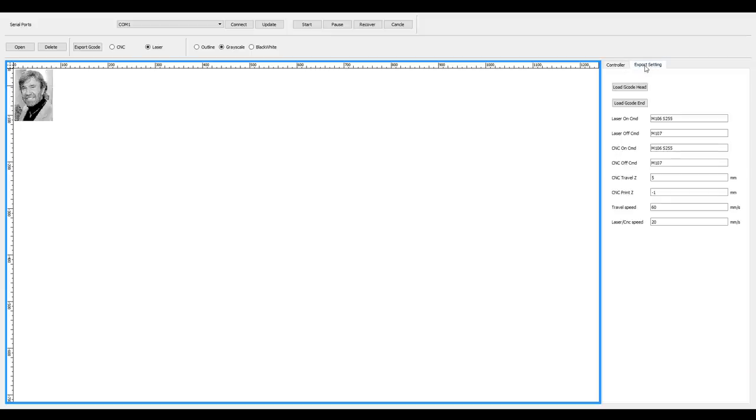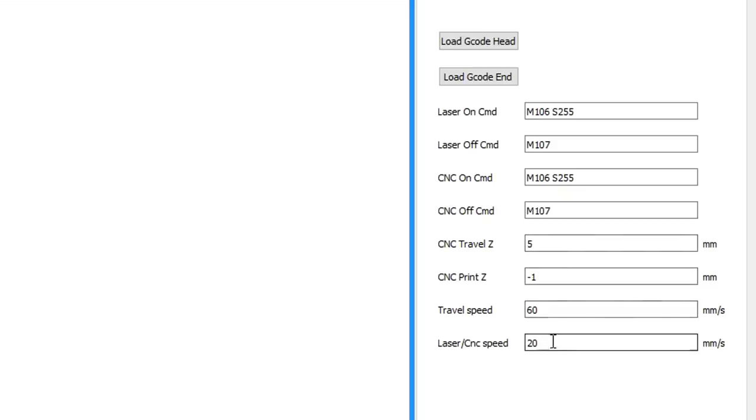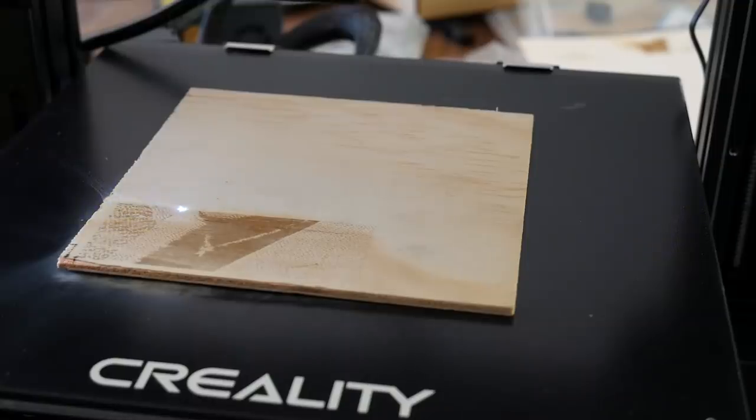My first attempt at greyscale was far too faint to be seen, but I was able to fix this pretty easily by going to the export setting and lowering the laser/CNC speed down from 20 to 10mm per second. After this, I re-exported to the SD card. Second time around, with the slower speed, the results were much, much better.